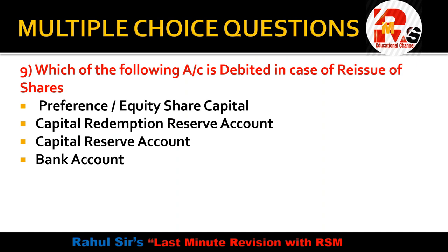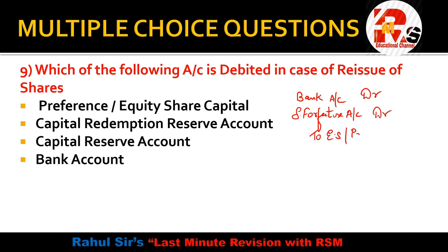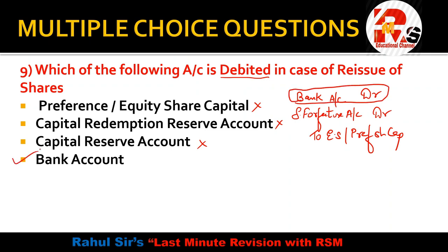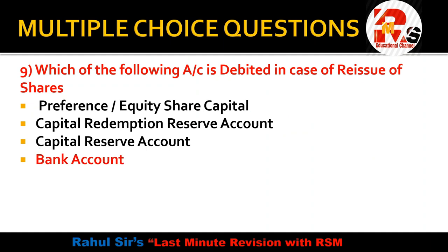Question 9: which of the following account is debited in case of reissue of shares? When shares are reissued, the journal entry involves: Bank Account debit, Share Forfeiture Account debit, to Equity Share Capital credit. So the account that is debited is Bank Account. The right answer is Bank Account.